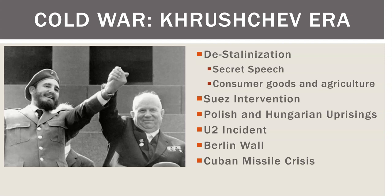The Suez Canal crisis: the British, French, and Israelis invaded, but the Americans and Russians got together and basically got them to give it back. The Berlin Wall went up in 1961 almost overnight and became the symbol of the Cold War. The Bay of Pigs was the failed American attempt to send Cuban exiles to invade Cuba. Castro then appealed to Khrushchev, and Khrushchev sent nuclear missiles to Cuba.